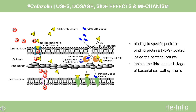Mechanism of Action: In vitro tests demonstrate that the bactericidal action of cephalosporins results from inhibition of cell wall synthesis, by binding to specific penicillin-binding proteins (PBPs) located inside the bacterial cell wall. It inhibits the third and final stage of bacterial cell wall synthesis. Cell lysis is then mediated by bacterial cell wall autolytic enzymes such as autolysins.